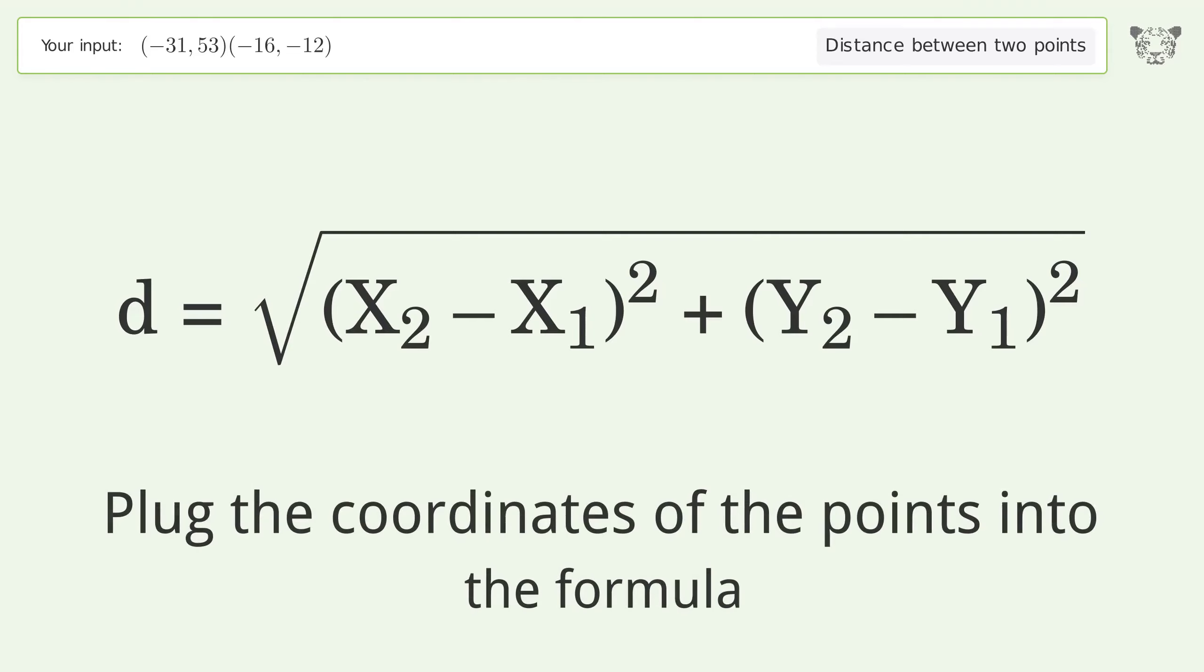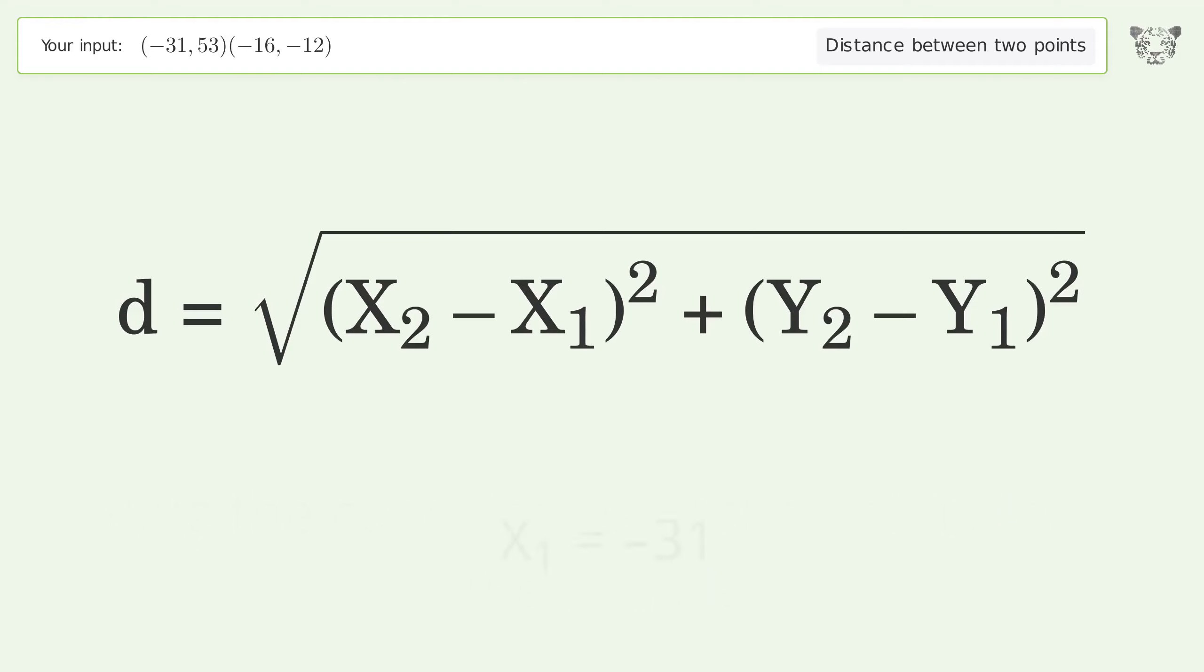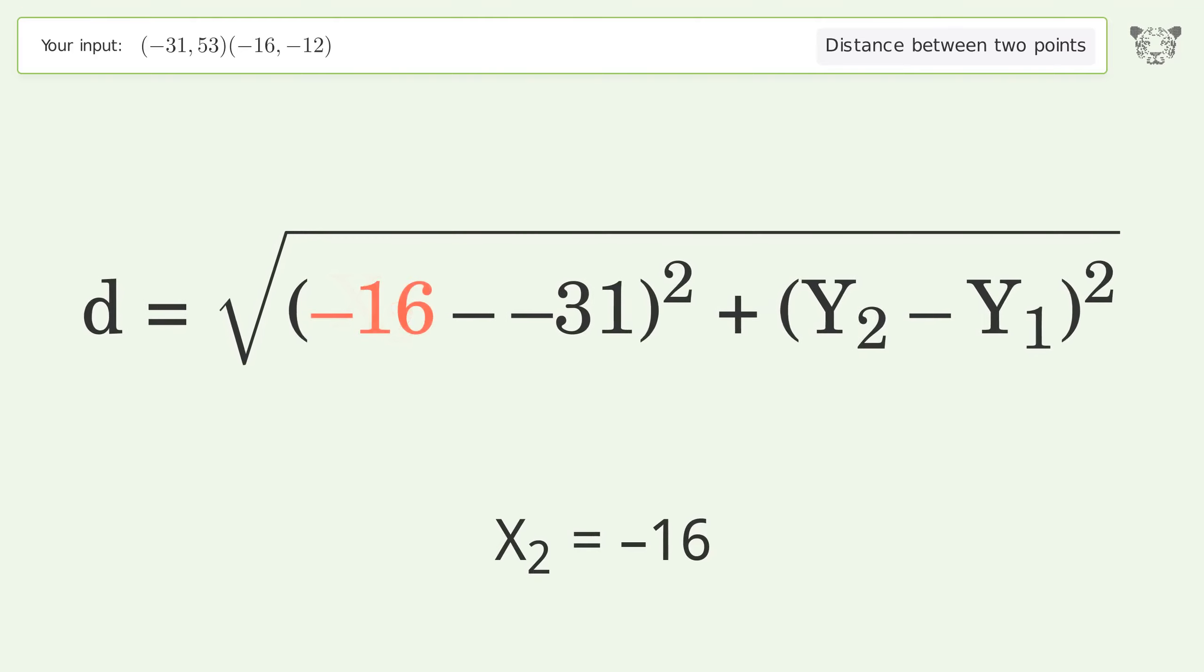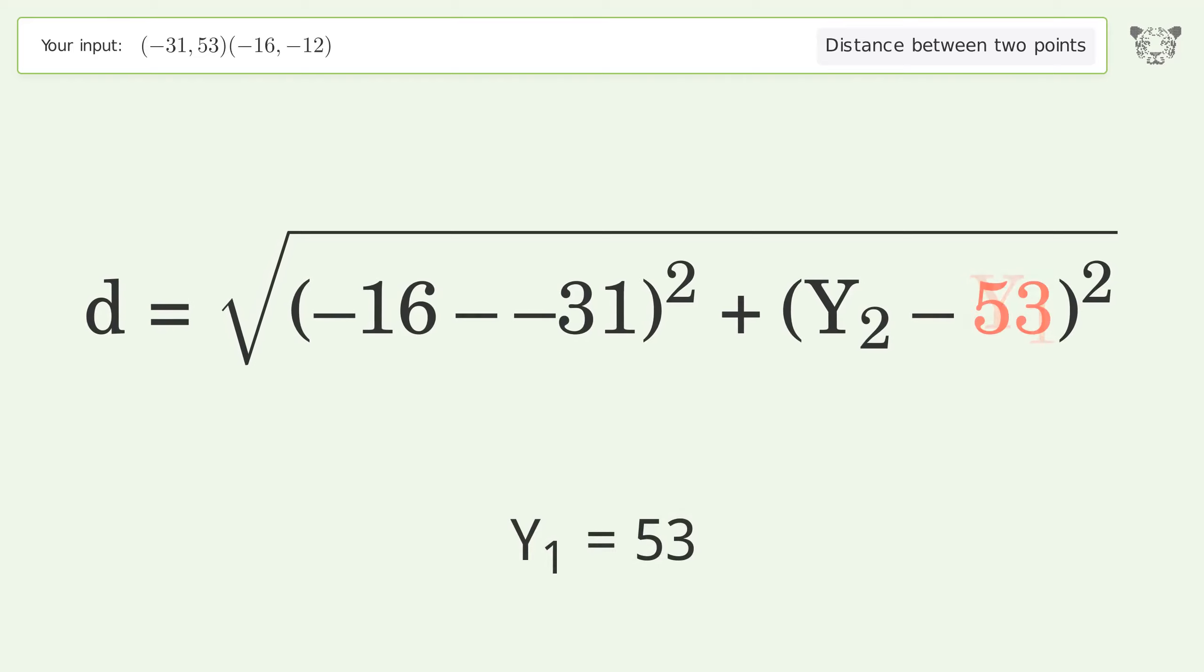Plug the coordinates of the points into the formula. x1 equals negative 31, x2 equals negative 16, y1 equals 53, y2 equals negative 12.